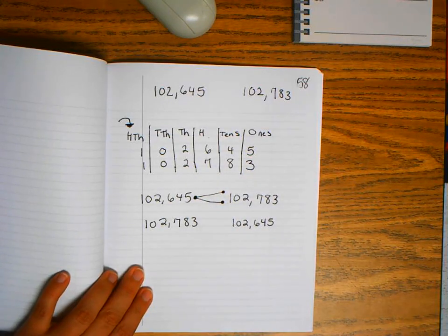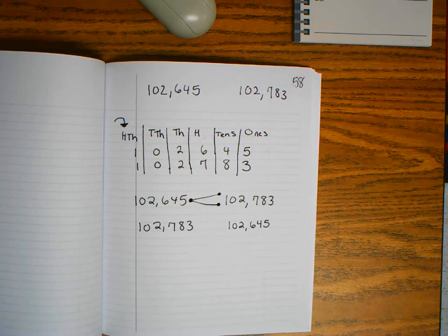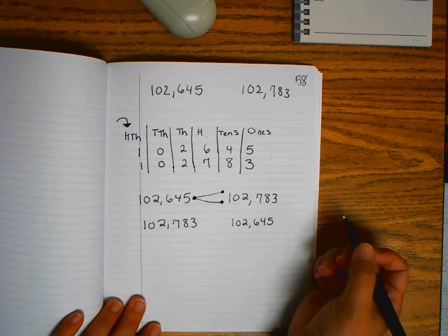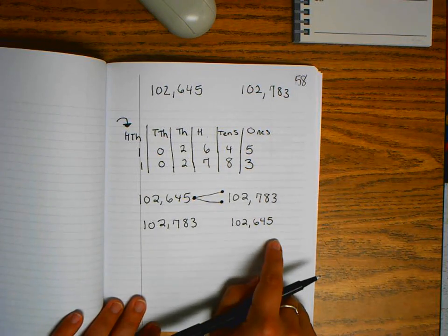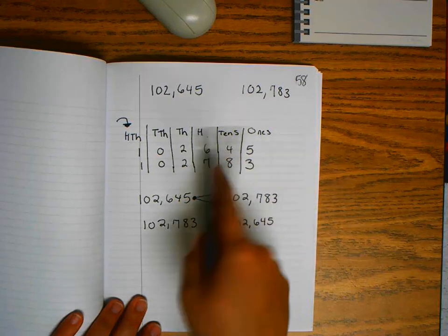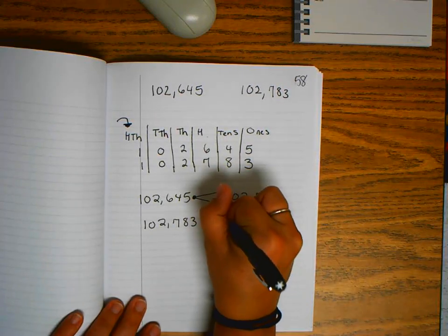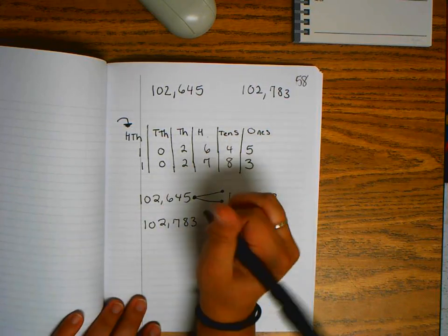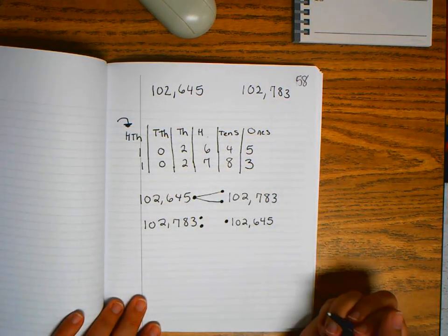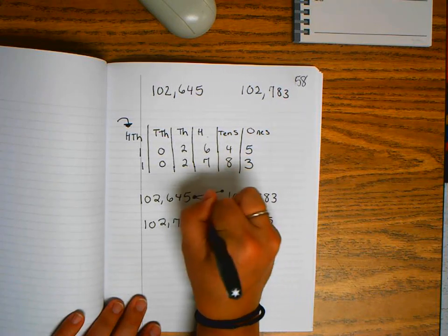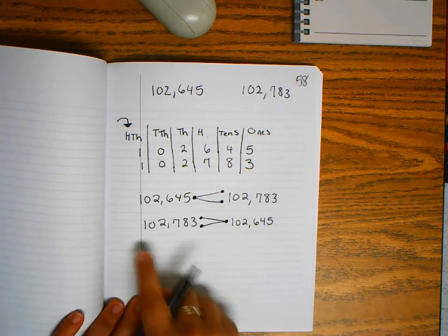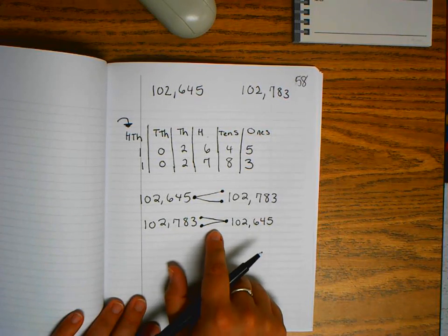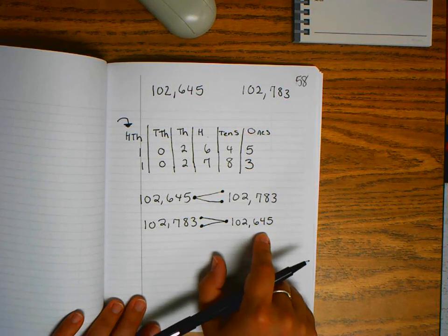You need to be careful that your symbol opens the correct way. Notice this time the smaller number comes second. The number with 6 gets one dot, the number with 7 - we said that was bigger - gets two dots. I connect my symbol. This now reads: 102,783 is greater than 102,645.